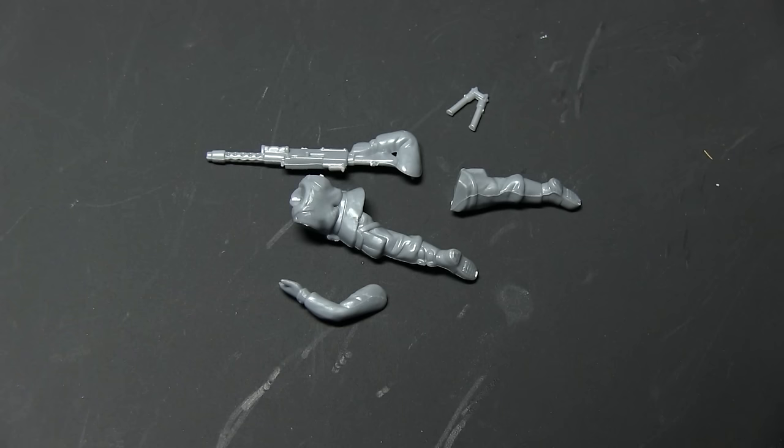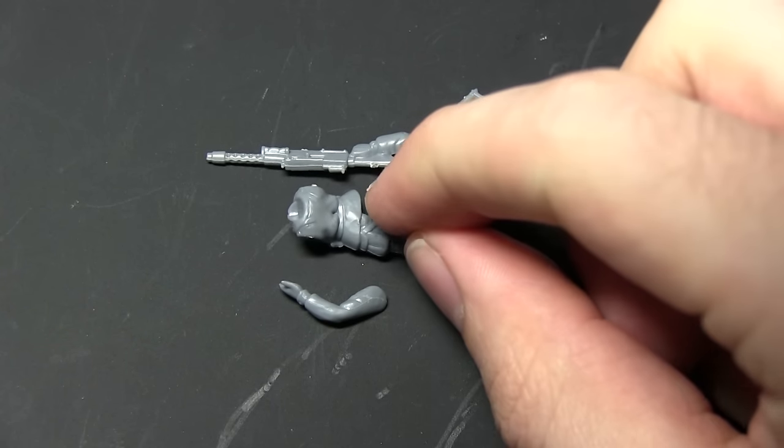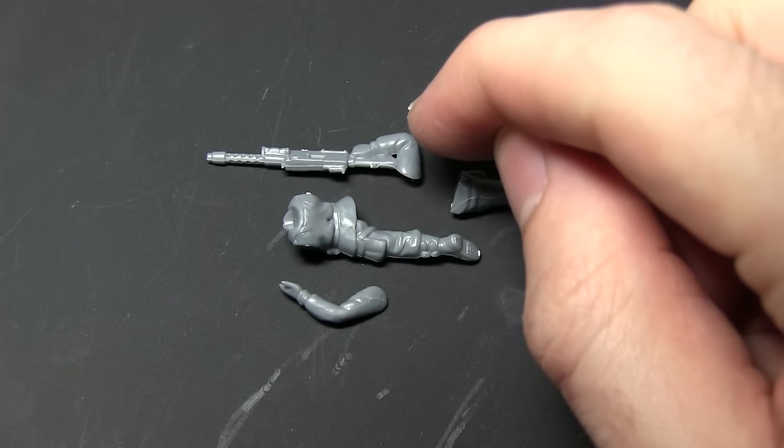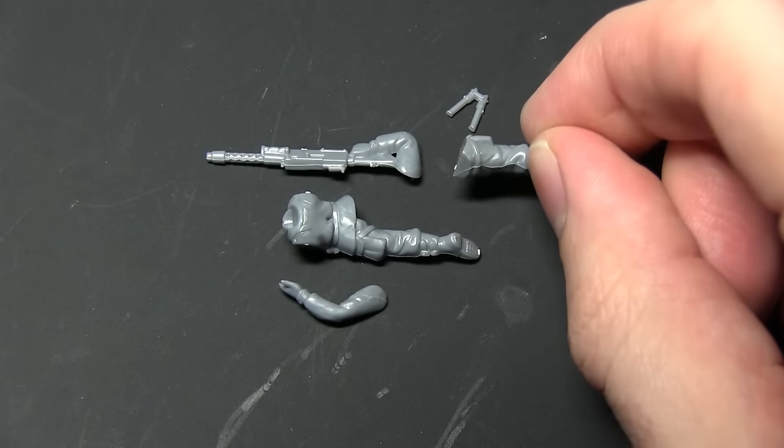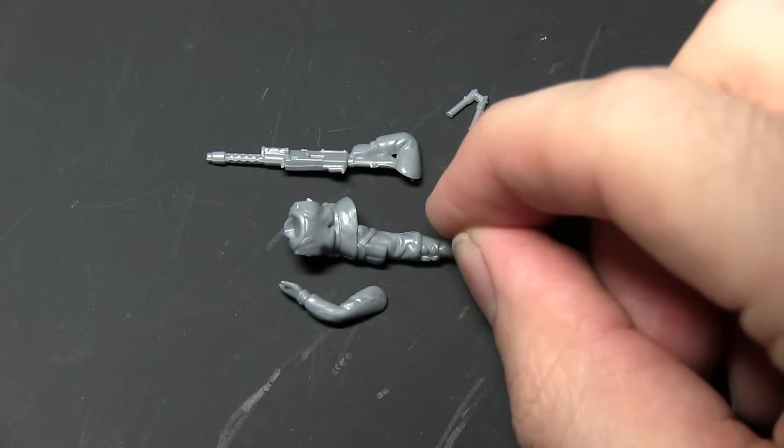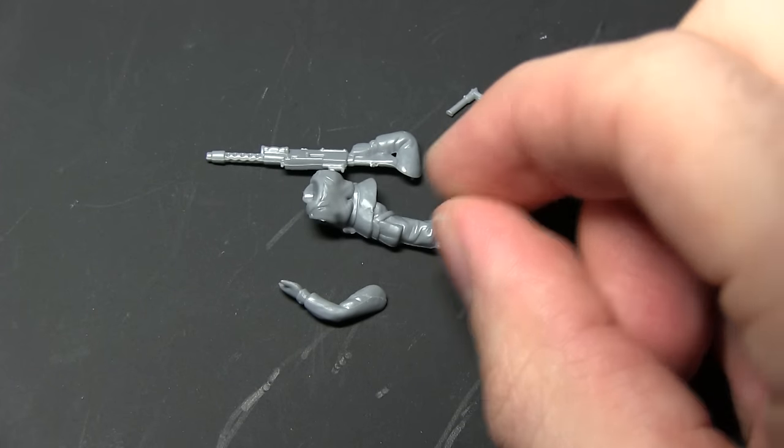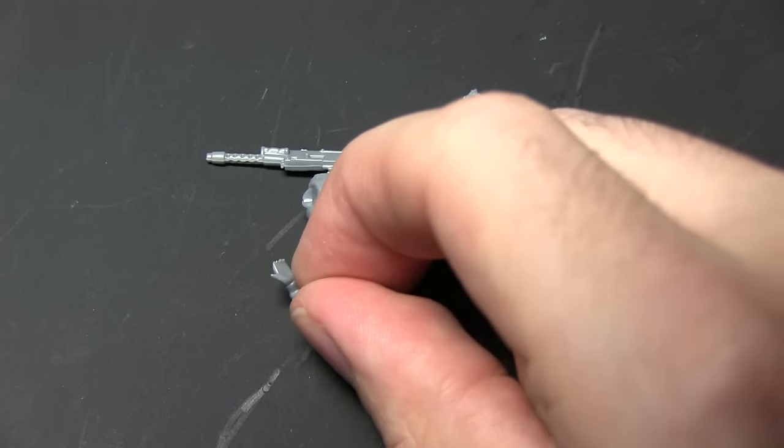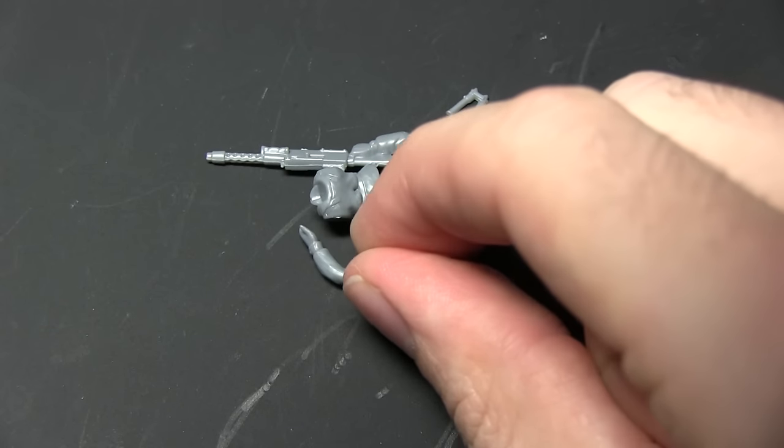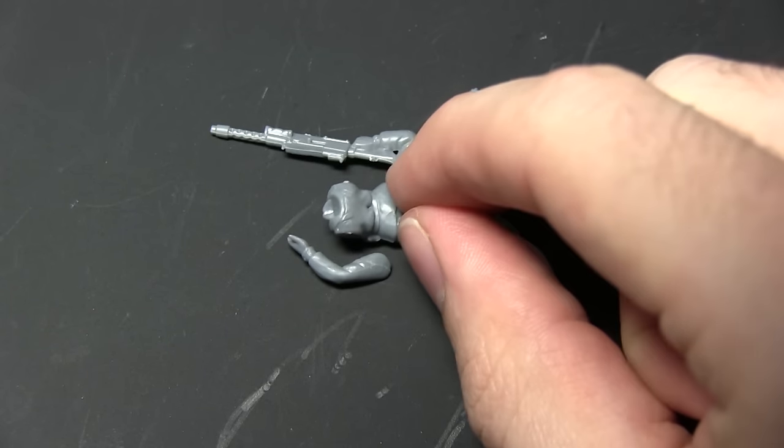The next team member we will be building is the MMG gunner himself. I'm using standard parts for this particular assembly. So we have part 9 which is the actual 30 cal itself, we have part 10 which is the bipod, part 7 which is the right leg and also the body in the left leg which is part 6. And finally we are also using part 14 which is a left arm which is listed as a BAR arm but you'll be using it for the LMG in this regard.